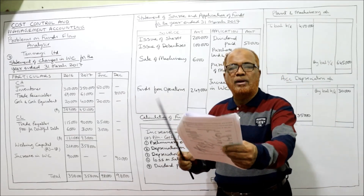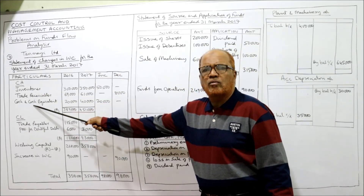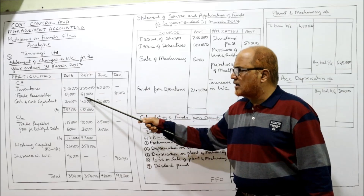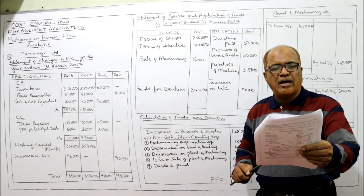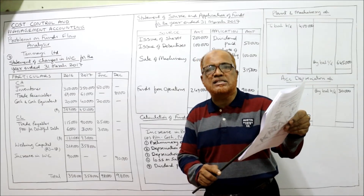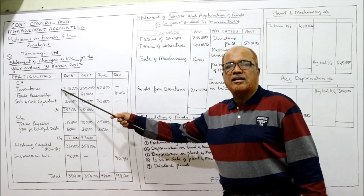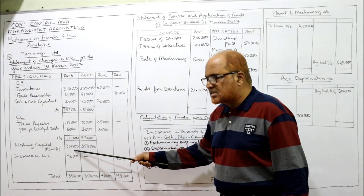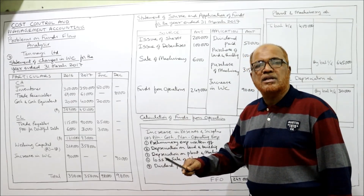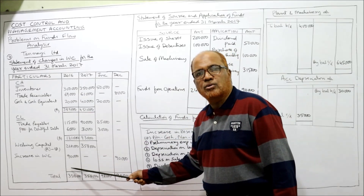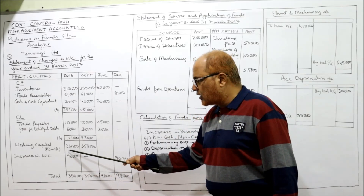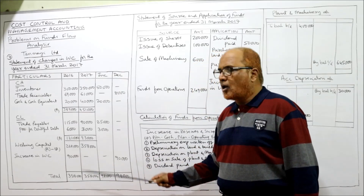Current assets are: inventories, trade receivable, and cash and cash equivalent. Current liabilities are two items: trade payable and provision for doubtful debts. Take the total and working capital is current assets minus current liabilities (A minus B). We get two lakh sixty-eight thousand working capital last year and three lakh fifty-eight thousand currently. During the current year, working capital has increased by ninety thousand. Three fifty-eight minus two sixty-eight equals ninety thousand increase in working capital. Put that amount in the lower column — both are equal.